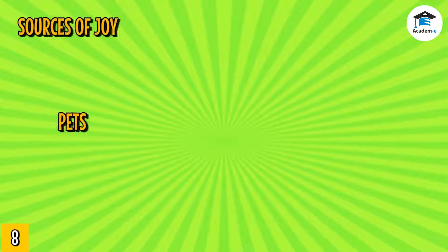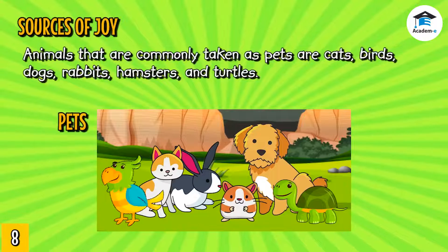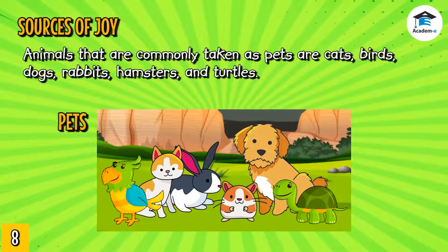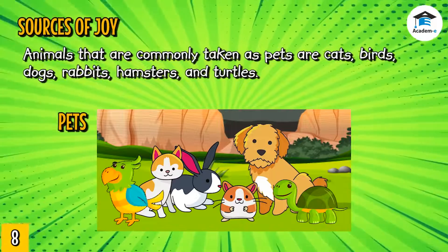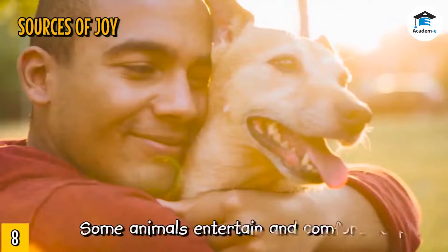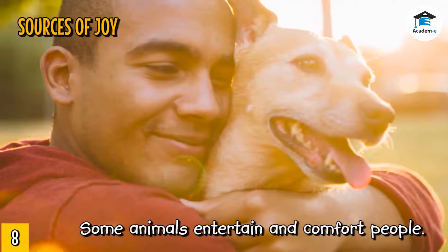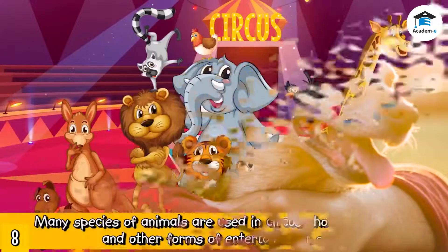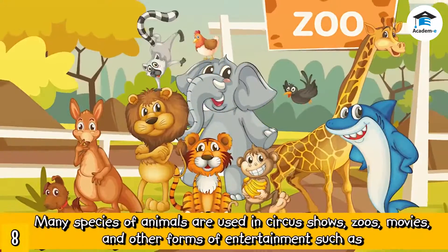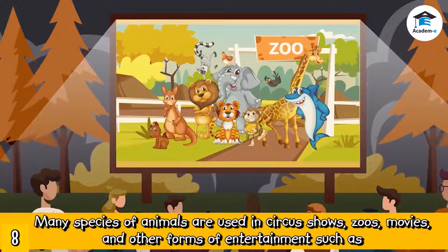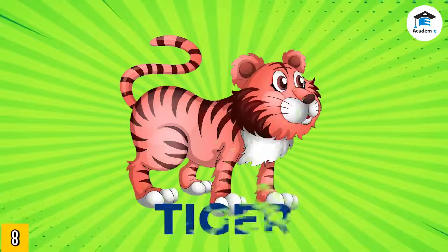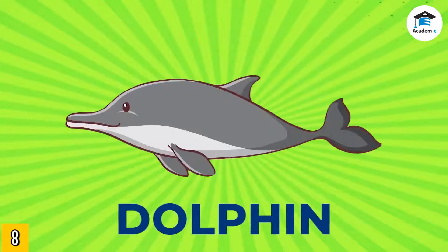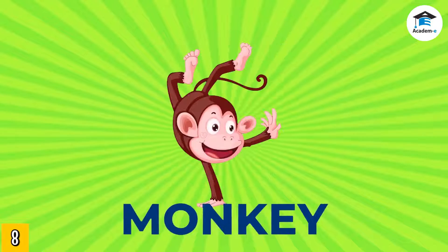Animals also give joy to people. These are animals raised as companions, or what we call pets. Animals commonly taken as pets are cats, birds, dogs, rabbits, hamsters, and turtles. Pets help people relax and keep their minds away from daily pressures. Many animals are also used in circus shows, zoos, movies, and other entertainment — including tigers, lions, bears, elephants, fish, whales, seals, dolphins, dogs, cats, and monkeys.